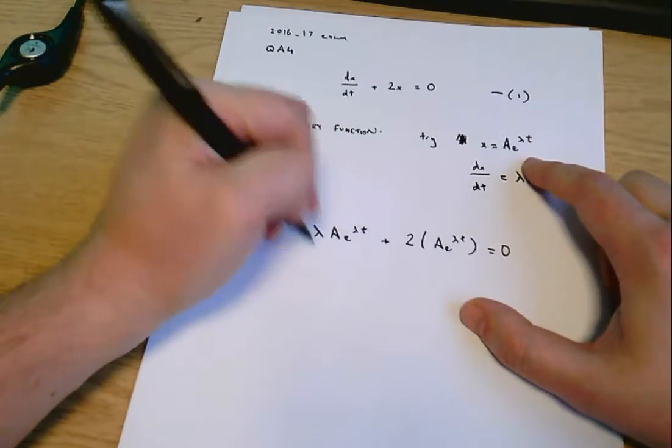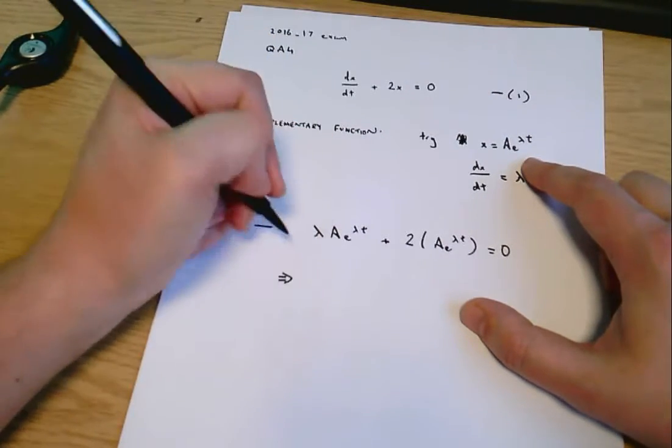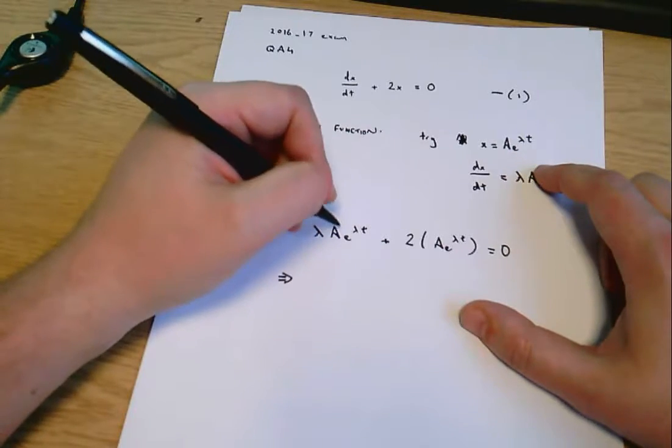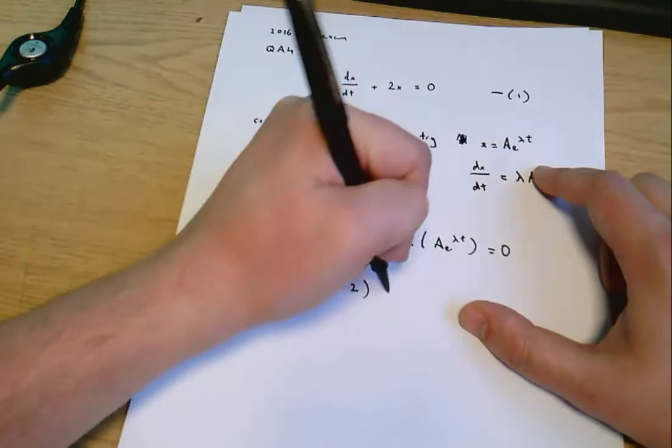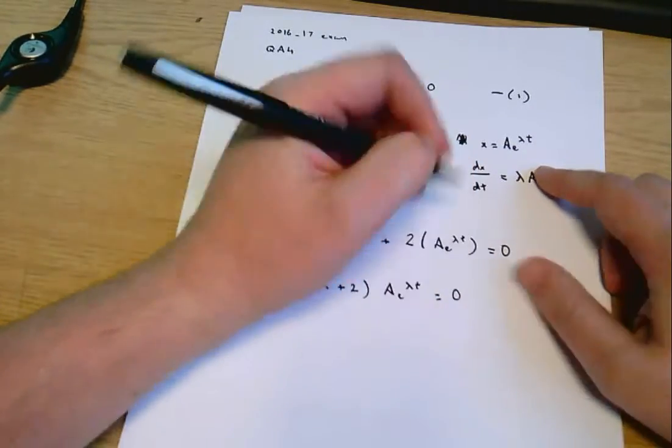And I can rewrite that taking out a factor of a e to the lambda t and I'll get lambda plus two times a e to the lambda t equals zero.